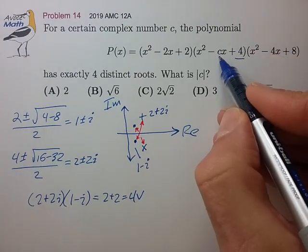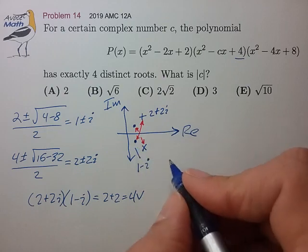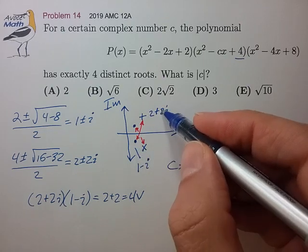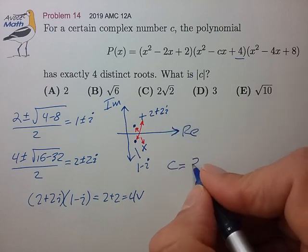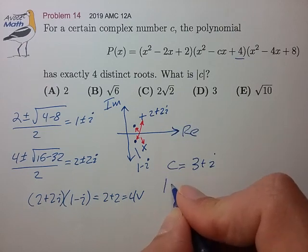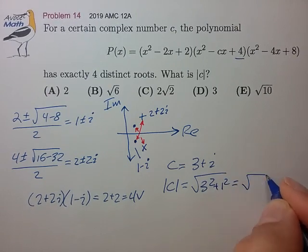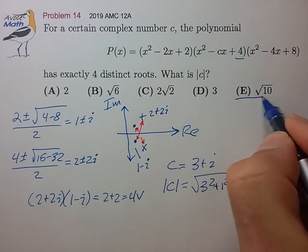And by Vieta's formula, c is equal to the sum of these roots. So c is equal to 3 plus i. So absolute value of c is the square root of 3 squared plus 1 squared, square root of 10 for choice E.